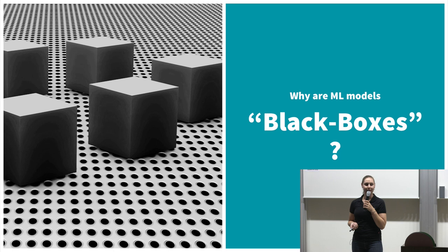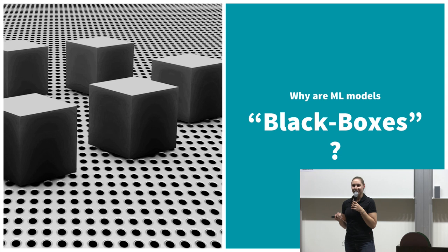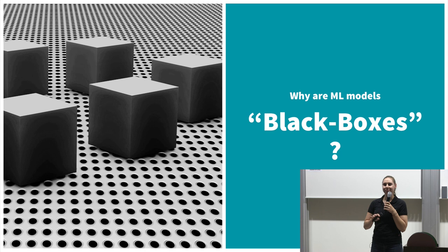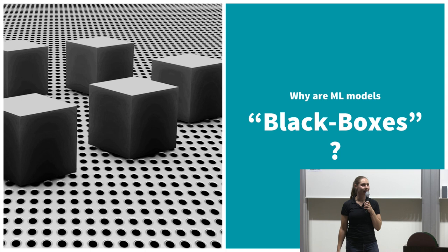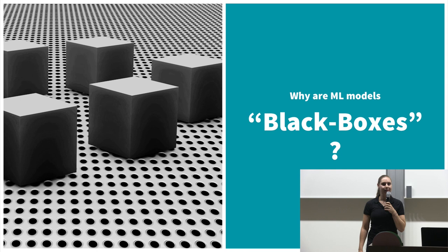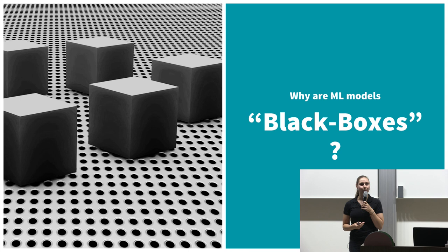So the first question: why are we calling machine learning models black boxes? The reason is simple — we don't actually know what happens in most of these models. With a decision tree, it's very simple: you can see at each split which feature and threshold led to going one direction of the tree or the other. But then you have random forests, which are more complicated, and with very complex deep neural networks, even if we knew all the weights and convolutions, we still wouldn't really know why one decision is made in a certain way.